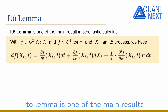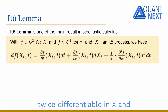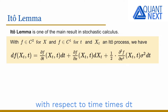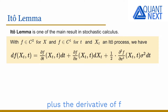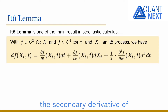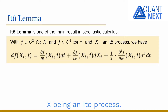Ito's lemma is one of the main results in stochastic calculus. The derivative of a function f, twice differentiable in x and differentiable in t, is equal to the derivative of f with respect to time times dt, plus the derivative of f with respect to x times dx, plus half of the second derivative of f with respect to x times the square of sigma times dt, where x is an Ito process.